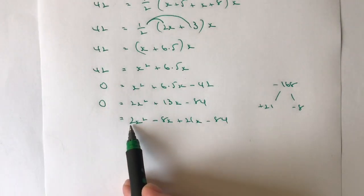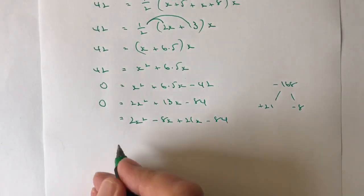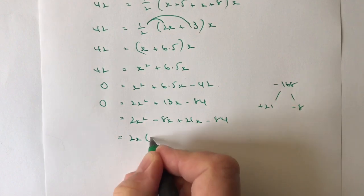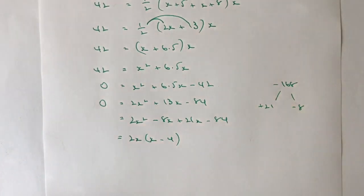So if I look at 2x squared minus 8x, I can factorize that for 2x. And what I get is x minus 4.